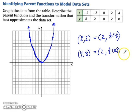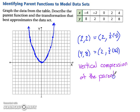So therefore, if you think about it, the data set seems to represent a vertical compression. So this is a vertical compression of the parent function by a factor of 1 half.